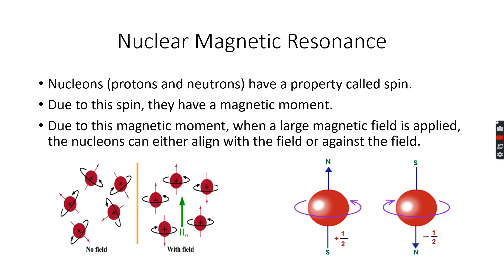So, nucleons, which are protons and neutrons, have a property called spin. And as they spin, they have a magnetic moment around them. Now, as you can see in this picture over here, these protons are spinning in random directions. And this is very important to note right now because here it says no field, which means that no magnetic field has been applied.